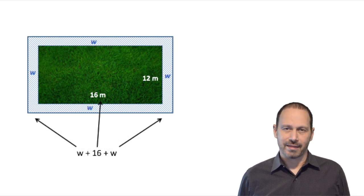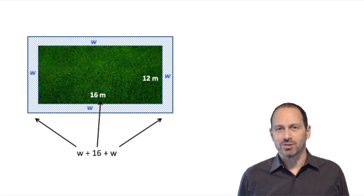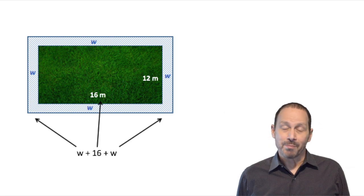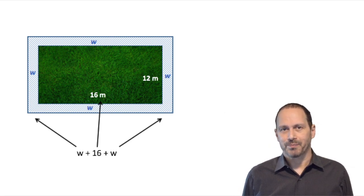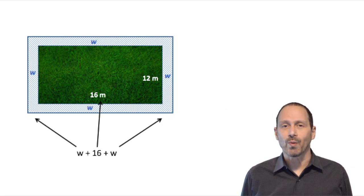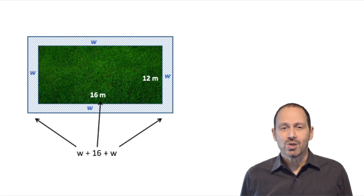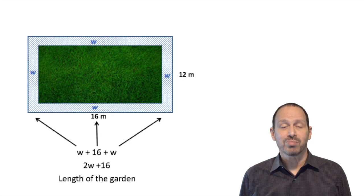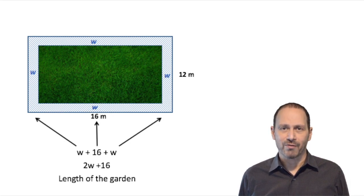Let's analyze the length. The length will start with 16 meters, but to that we have to add the width of the pathway, which is W. However, because the pathway goes all the way around, we have to add W twice. So we get W plus 16 plus W is the length of the garden, of the rectangle.